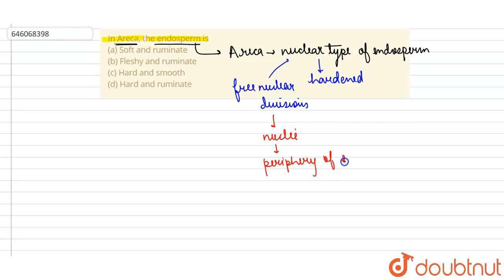on leads to the formation of a cellular type of endosperm. Okay, and the endosperm in Erica, therefore, in Erica this type of endosperm is hard and it is ruminate. Okay, it